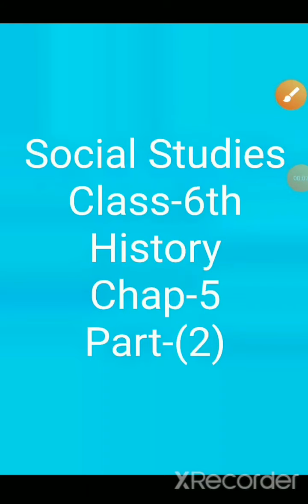Hello and good morning students, welcome back to the online session class of social studies. As we started our history chapter number five yesterday, I taught you about the Ashwamedha Yagya — how the horse wanders freely and the king who stops that horse has to fight, and whoever wins becomes the raja of that area. I also taught you about the Varnas: the four castes are Brahmin, Kshatriya, Vaishya, and Shudra. The Shudra caste is considered the lower caste, and women were also considered as Shudras.